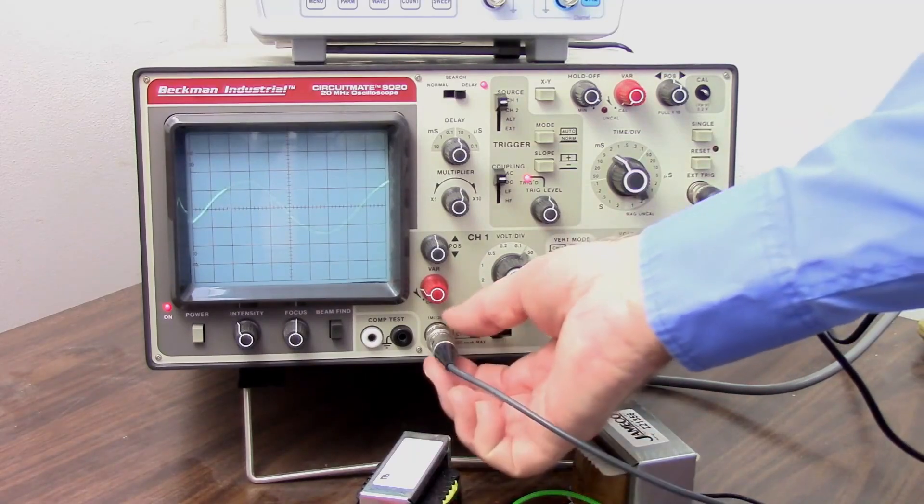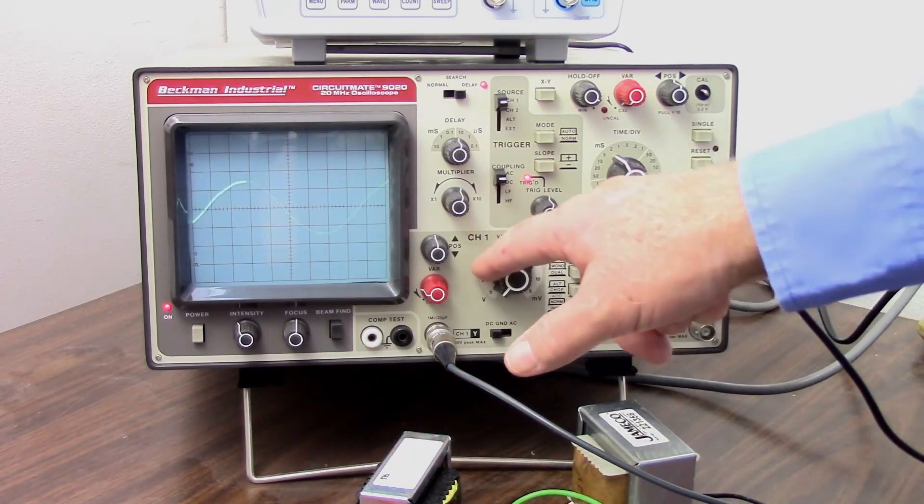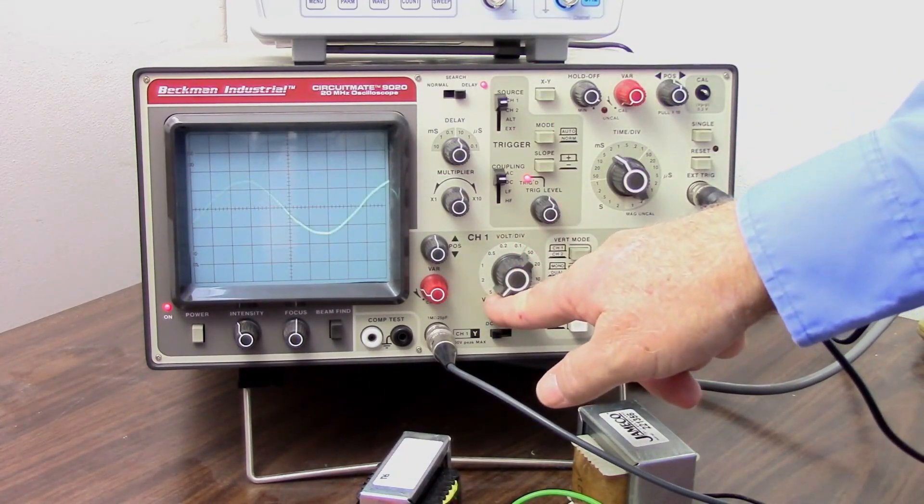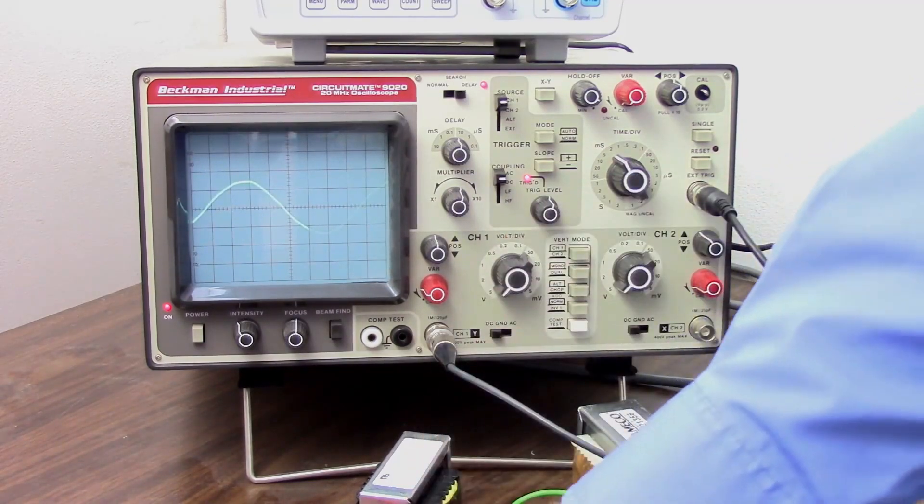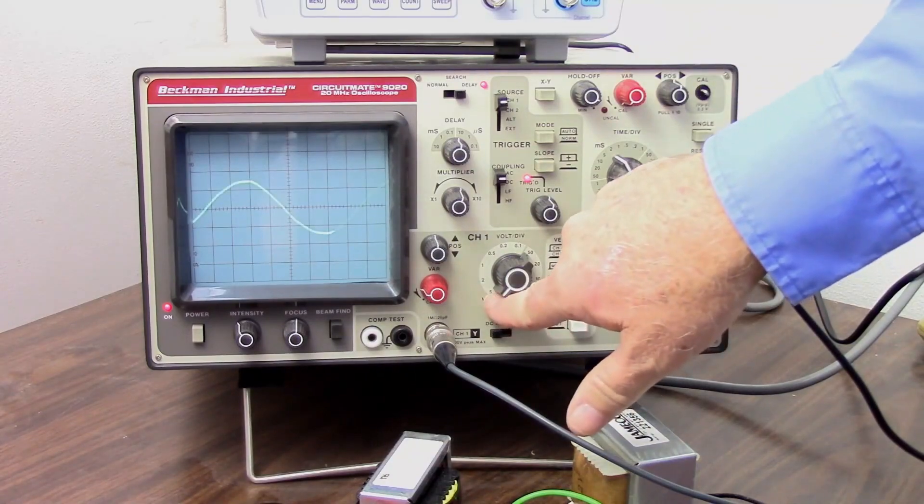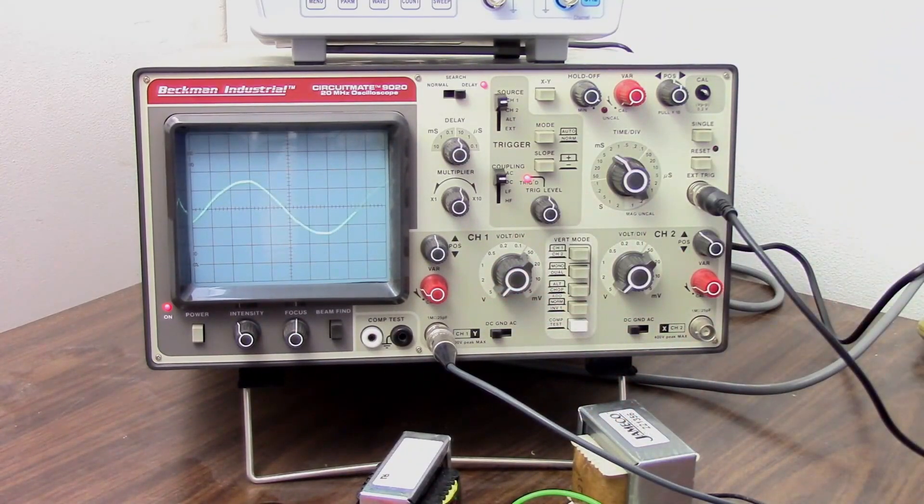Some scopes even have probes that are sensed by the oscilloscope, and it turns on a light which tells you which scale to use. But without something like that, remember to always multiply your voltage by ten when you have your probe set to times ten. Makes sense. Times ten? Times ten. So now this is 50 volts per division instead of 5 volts per division.